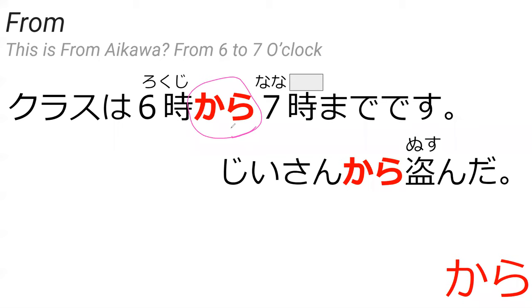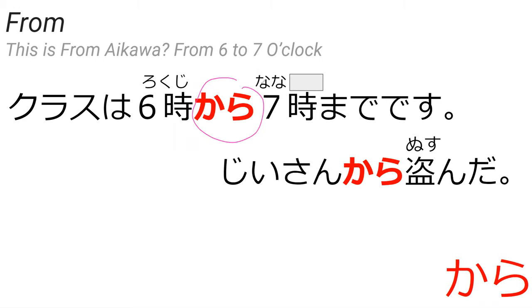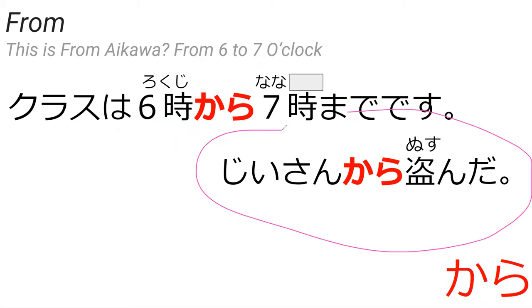Now we're looking at kara that goes after nouns, not the kara that goes after sentences. If this was 'because,' kara would have da between it and the noun — rokuji dakara means 'because.' But there's no da here, so it goes directly after a noun — it means 'from,' same as the English word 'from.' From six o'clock to seven o'clock would be rokuji kara nanaji made. Can you read the sentence for me? 'Jisan kara nusunda' — I stole from the jisan — exactly perfect.